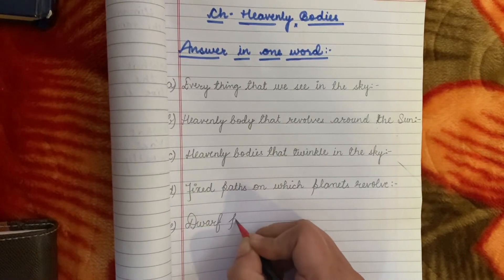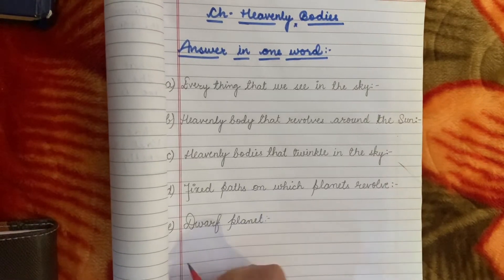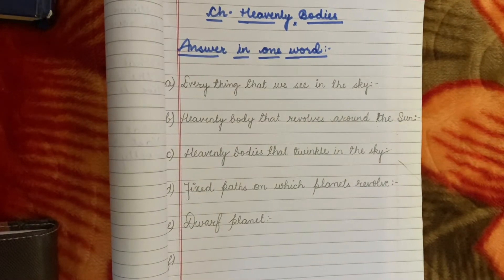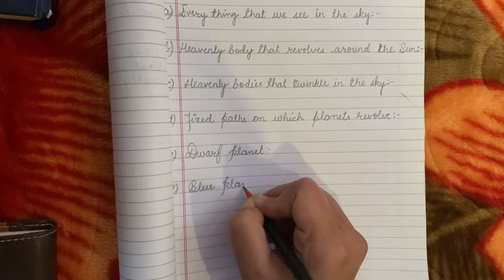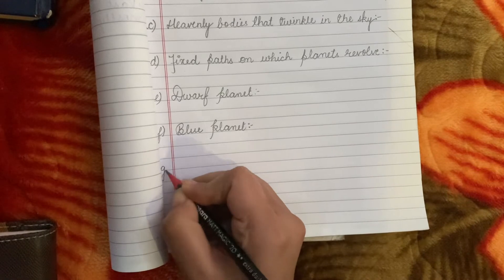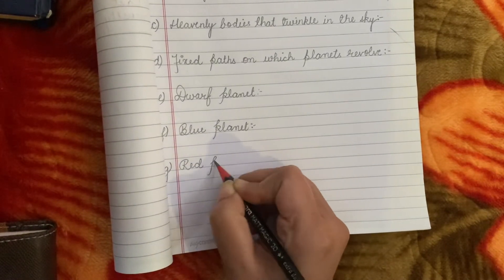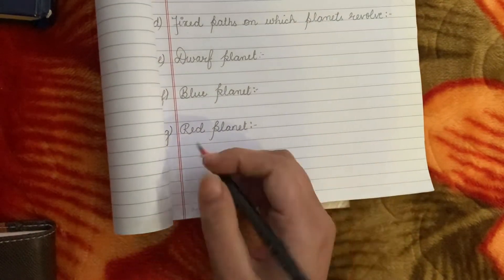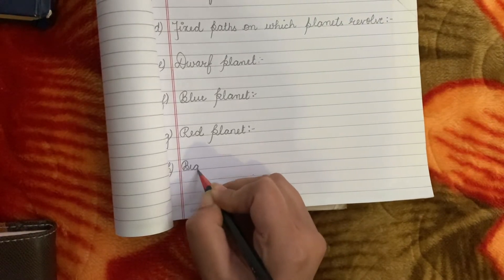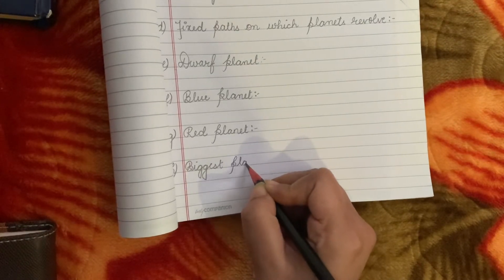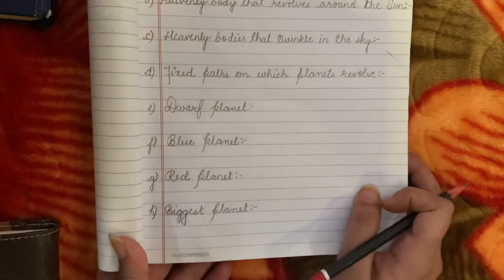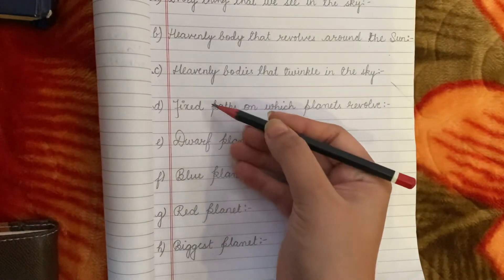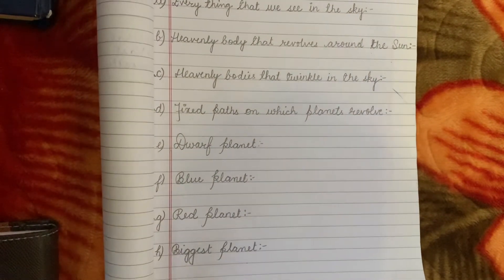Next: Dwarf planet. Then: Red planet. Then write down: Biggest planet. So today we will do only 8 one-word answers. There are many more that we will do tomorrow or day after tomorrow. Today we will do 8 one-word answers, and the remaining we will do on Monday, and then we will start the new chapter.